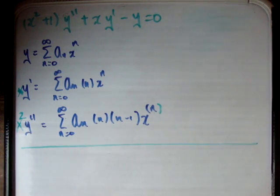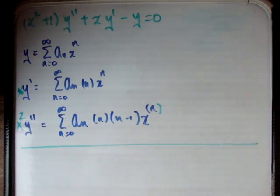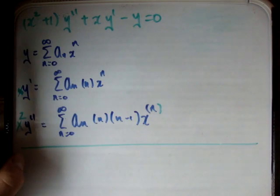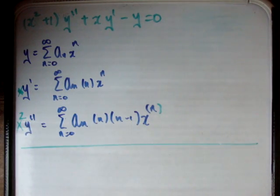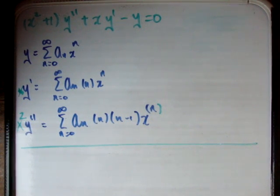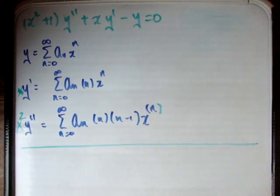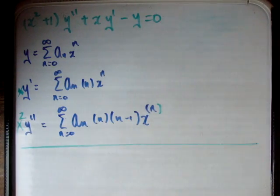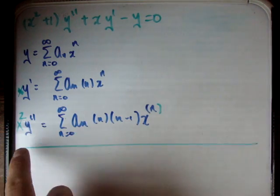I've said in a previous video that when you're solving differential equations using power series, each of your separate power series must begin at the same point, and they must have the same power. So if you look carefully here, each of these is the same power, and each of these begins at 0. The only one we need to look at then is what happens when we don't have x squared multiplied by y double prime.